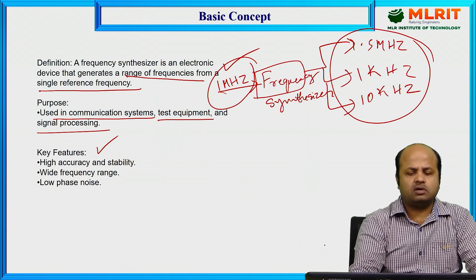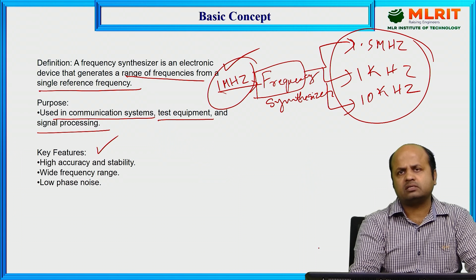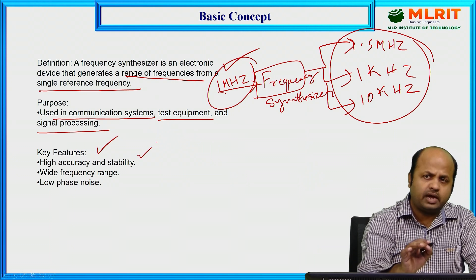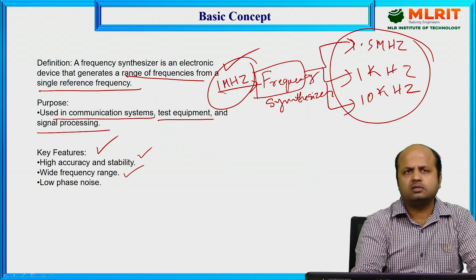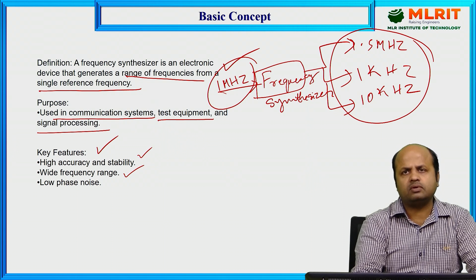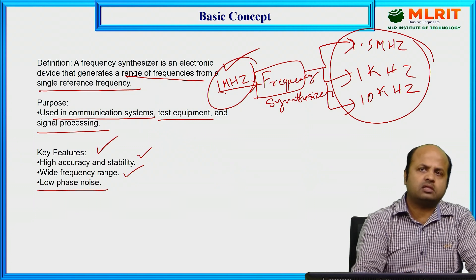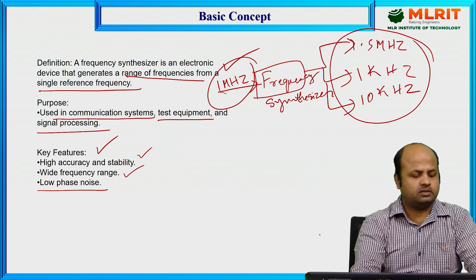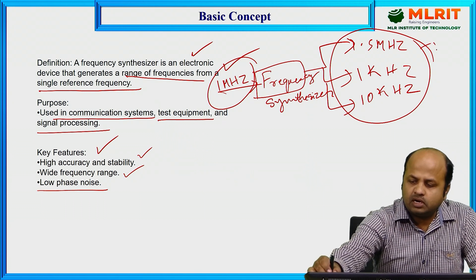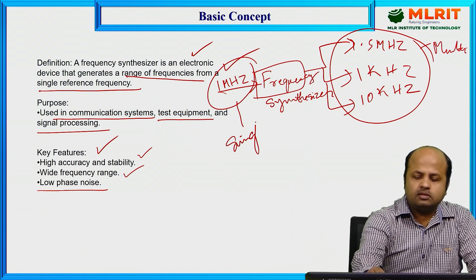What are the key features of a frequency synthesizer? Key features include accuracy and stability. It has high accuracy and should be highly stable. It should also have a wide range of frequency at the output, and it should obviously have low noise.